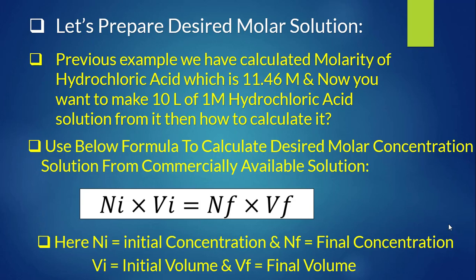Now let's prepare a desired molar solution from a commercially available solution. We calculated the molarity of HCl as 11.46 molar. Suppose you want to make 10 liters of 1 molar HCl solution. Use the dilution formula: Ni × Vi = Nf × Vf, where Ni = initial concentration, Nf = final concentration, Vi = initial volume, and Vf = final volume.